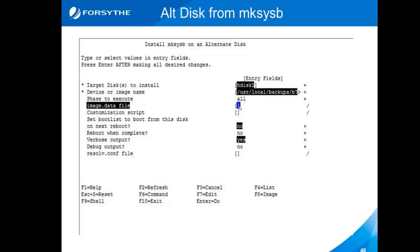I tell it where my makesysb is — I just point it at my backup directory that has my makesysb. And I could, if I wanted to — you can see the piece in blue — provide it with an image data file. I've actually changed it here: I told it not to set the bootlist to boot from this disk on the next reboot. I think it defaults to yes, so if you don't want it to reboot from the new alternate disk image the next time you reboot, make sure that is set to no.